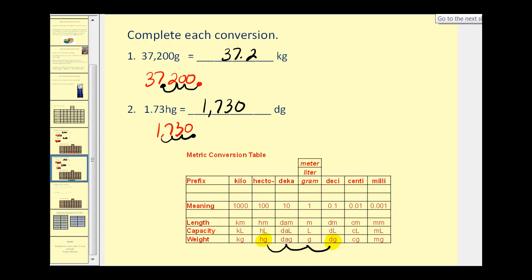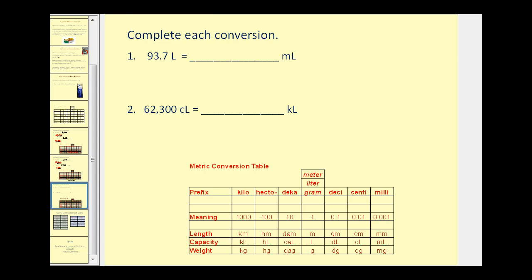Now let's look at a couple of capacity examples. First, we're converting 93.7 liters to milliliters — going from larger to smaller units, three columns to the right. We multiply by ten to the power of three, moving the decimal three places to the right. We need to add two zeros, giving us 93,700 milliliters.